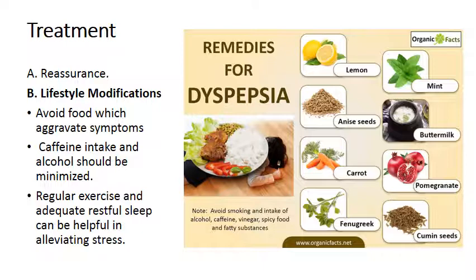Non-medical treatment includes reassurance that the disease is a benign functional disorder that does not lead to malignancy. Lifestyle modification such as regular exercise and adequate restful sleep can help alleviate stress. Avoid or minimize caffeine and alcohol. Foods that aggravate symptoms should be avoided, such as onions, peppers, citrus fruits, and fatty, heavy, or spicy food.